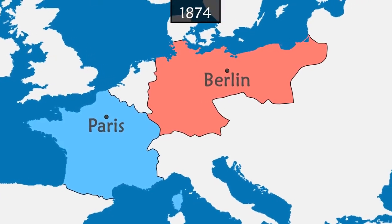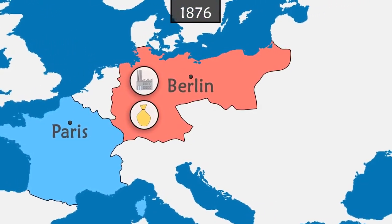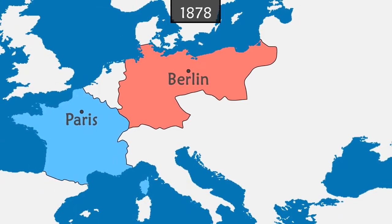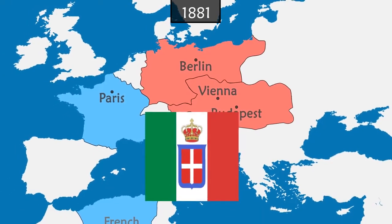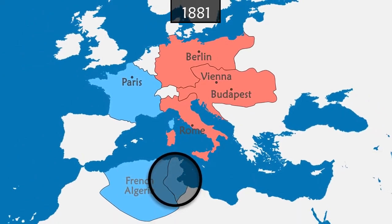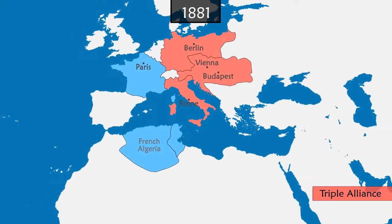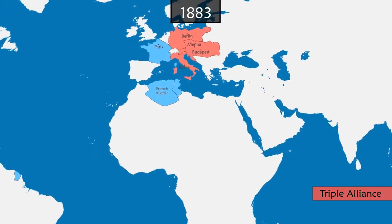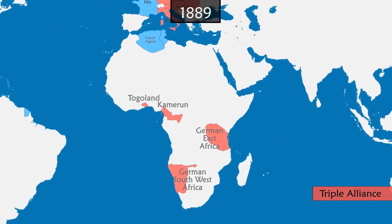In the following years, Germany would greatly advance its industry and economy. The country also builds alliances, first with the Austro-Hungarian Empire, and then with Italy, which is frustrated by France colonising Tunisia. The three form the Triple Alliance. Growing in power and status, Germany begins colonising African territories.